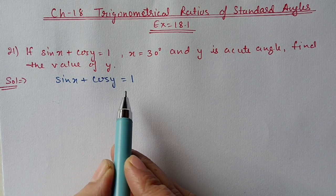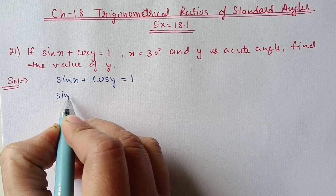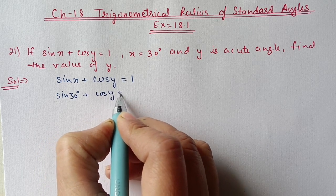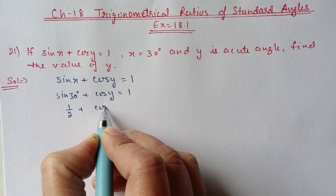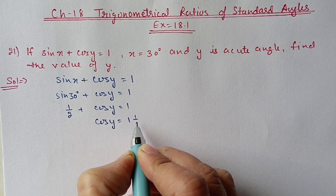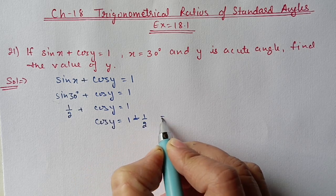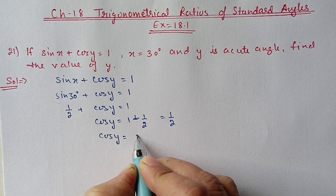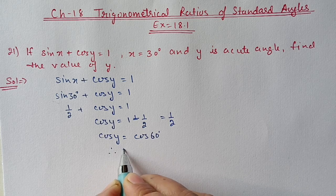sin x plus cos y equal to 1 is given, so we will substitute x value here: sin 30 plus cos y equal to 1. sin 30 is 1/2, so cos y equals 1 minus 1/2, which is 1/2. Since cos 60° equals 1/2, therefore y equals 60 degrees.